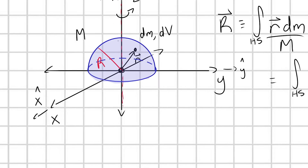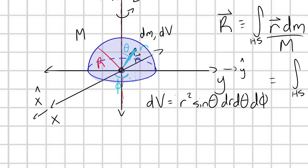In spherical coordinates, we define the location of points with a radial distance little r, a polar angle θ from the z-axis, and an azimuthal angle φ from the x-axis when projected onto the xy-plane. With this coordinate system, the volume element dv in spherical coordinates is r² sin θ dr dθ dφ. You can find that equation on the coordinate systems equation sheet in the description.